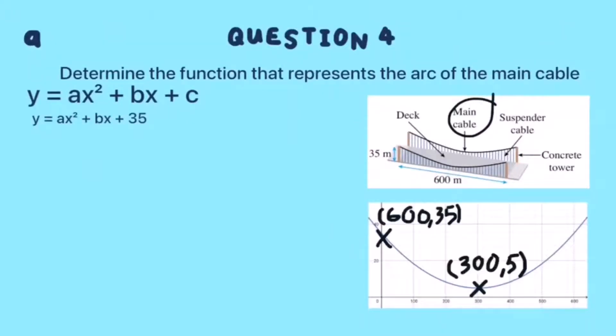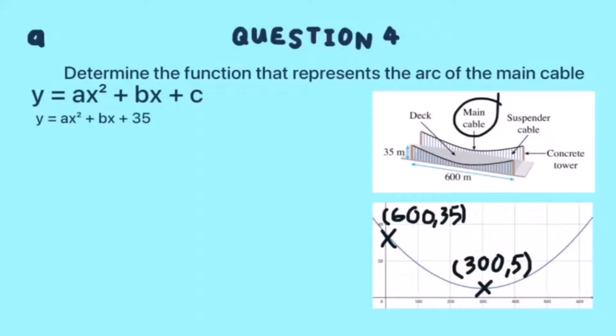To get the value of a and b, we need to get coordinates from the graph and substitute them into the function. The first one is (300, 5). Substitute them into the function. We will get 5 = 90000a + 300b + 35.